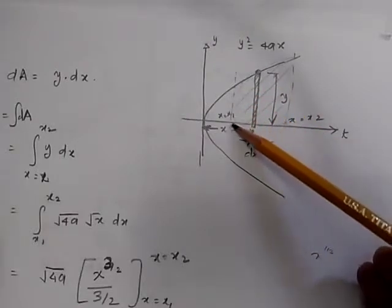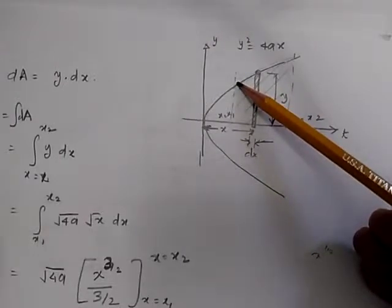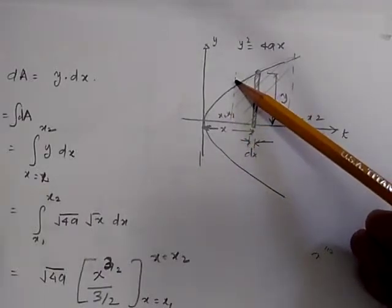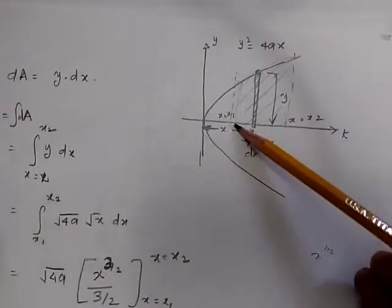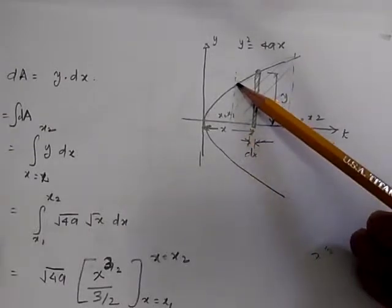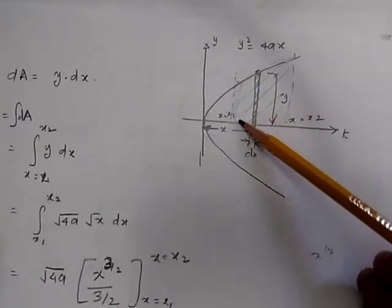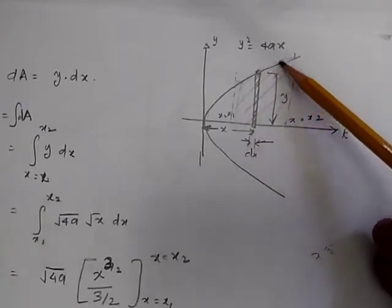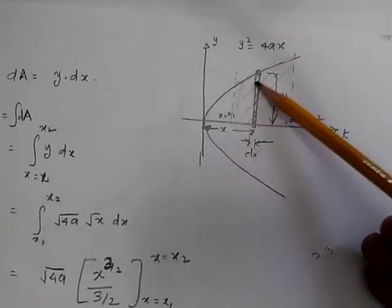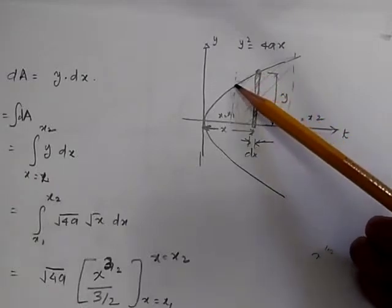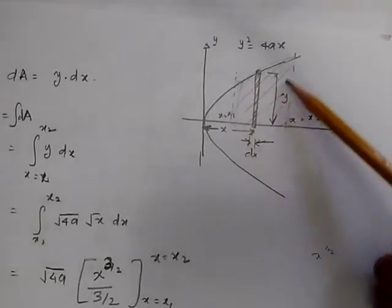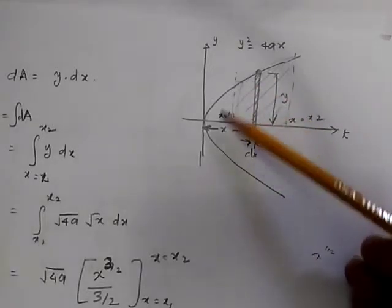We will take the first strip and calculate the value of y, assuming it's a rectangle. Right at the center of this strip, we can find the value of y, which will be a very good approximation. We calculate this area, then the next area, and so on. Adding all those areas gives us the area under the curve. This is how a modern computer would do it for any general curve.